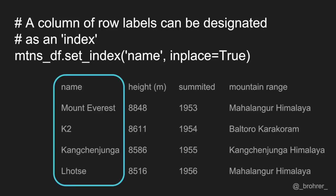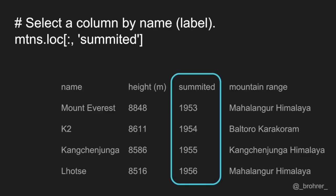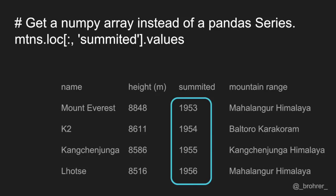It's a common operation to pick out one of the data frame's columns to work on. To select a column by its label, we use the .loc function. One thing that makes our commands easy to interpret is to always include both the row index and the column index. In this case, we're interested in all of the rows, so we use a colon. Then to indicate the column, we add its label. The command mountains.loc[:, 'summited'] gets us just the summited column. It's worth noting that this command returns a Series — the Pandas data structure used to represent a column.